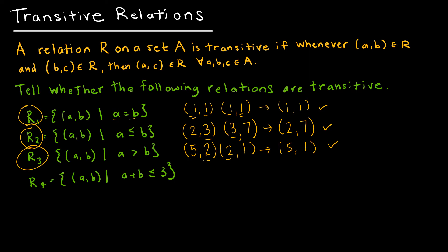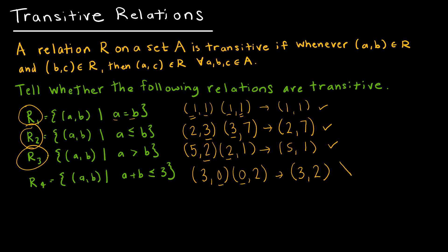R4 says A plus B is less than or equal to 3. Consider (3, 0): 3 plus 0 is less than or equal to 3, so it's in R4. And (0, 2): 0 plus 2 is less than or equal to 3, so it's in R4. Does that imply 3 plus 2 is less than or equal to 3? No, it doesn't. So R4 is not transitive.